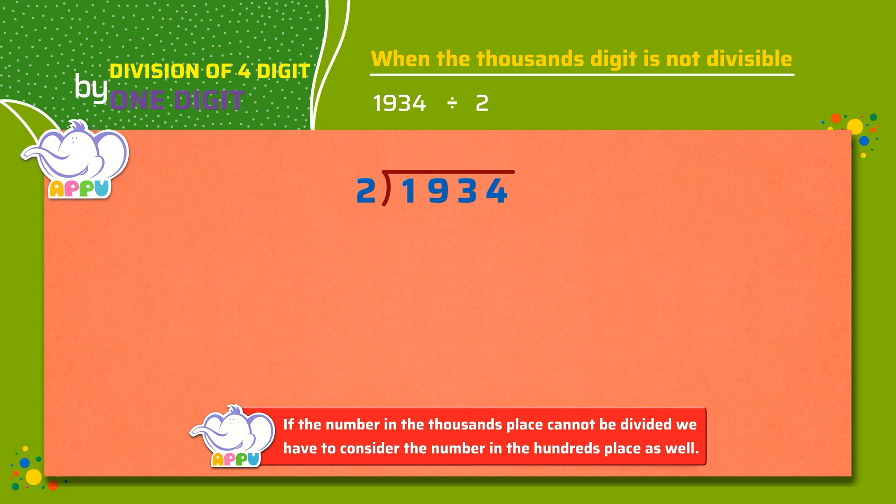Step one. We cannot divide one by two since one is smaller than two. So we consider the hundreds digit as well. We figure out how many twos does it take to make nineteen or almost nineteen, which is nine.